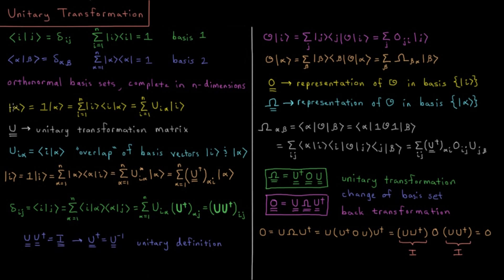Let's say we have alpha here — some basis vector from this set. We say that alpha equals an identity operator acting on alpha, and that equals the resolution of the identity operator: sum from i equals 1 to n of ket i times bra i acting on ket alpha. This is equal to a sum from i equals 1 to n of matrix element u_{i,alpha} times basis vector i, where the bracket ⟨i|alpha⟩ we define as a matrix element.